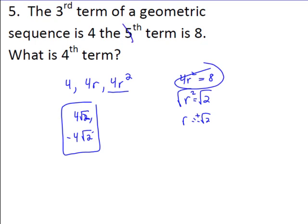If there were more terms in between — say finding up to the eighth term — you'd end up with r to the fifth instead of r squared, and use the fifth root of 2. This process of finding the term between two given terms is called the geometric mean, since 'mean' means finding the value in between — here done in a geometric sequence rather than arithmetic. Make sure you know both geometric series formulas and you should be able to solve most of these problems.